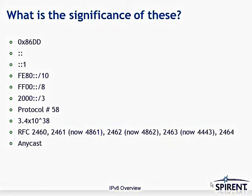Anycast is an address type that routes to the closest device with that address. CIDR, pronounced 'cider', is classless inter-domain routing — the hierarchical structure for IPv4. IPv6, on the other hand, is classless by nature. IPv6's default MTU is 1280, as opposed to IPv4's default MTU of only 576 bytes.